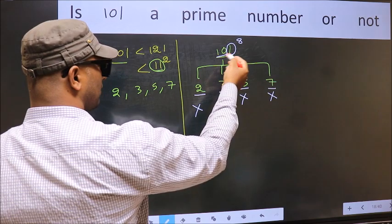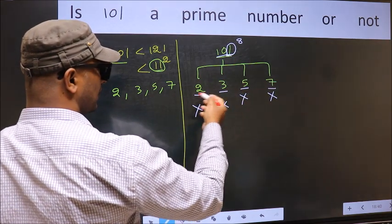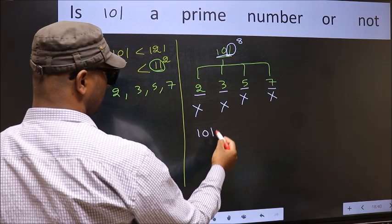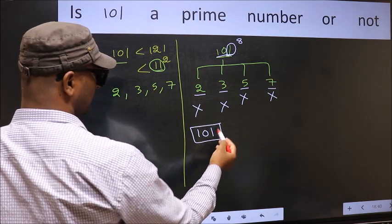So 101 is not divisible by any of these numbers. Hence 101 is a prime number.